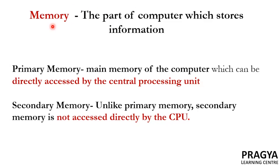We all might be knowing that memory is a part of a computer or any other electronic device which stores information. Basically, there are two types of memory: primary memory and secondary memory. Primary memory is the main memory of the computer which can be directly accessed by the CPU or processor.